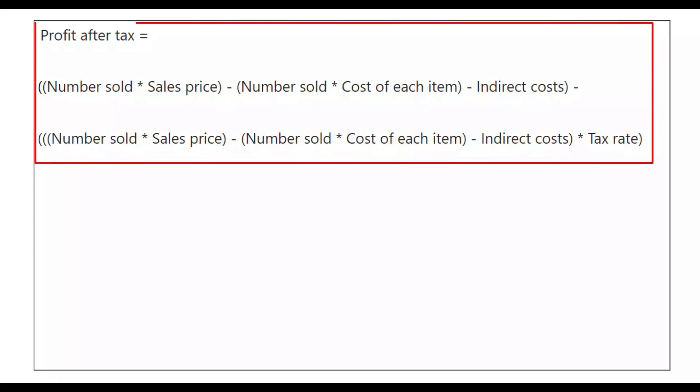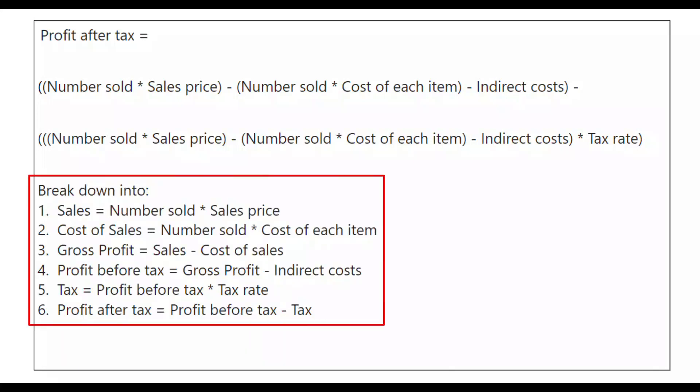The purpose of the calculation is to work out how much profit is being made on the sales of these products after tax. And to do that, I will use this simplified profit after tax calculation. Again, you don't have to understand the calculation. It's more about understanding how to split up a calculation to make it easier for writing the code. I will break this calculation down into these six parts. These same parts will be used in example one and example two.